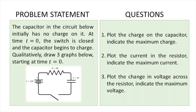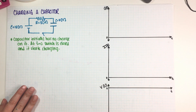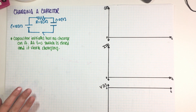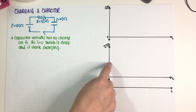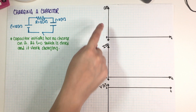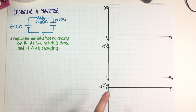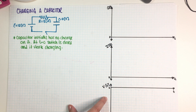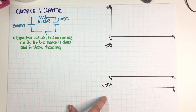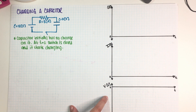We need to indicate the maximums, the half-lives, and everything that we can possibly figure out. I have the problem over here and I have three empty graphs — one for the charge, one for the current, and then one for the voltage across the capacitor. So let's go ahead and get started.